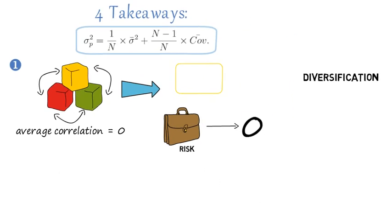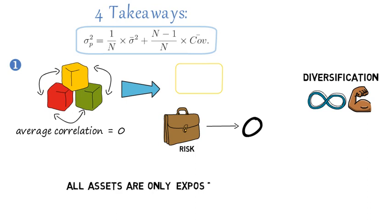Said differently, the power of diversification is indeed limitless if asset returns are on average uncorrelated. Such a setup would arise if all assets are only exposed to asset specific risk.